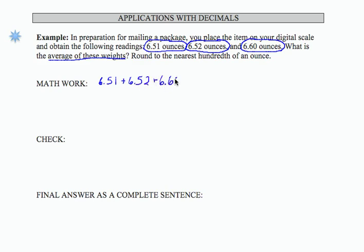So I'm going to add, and try to write a little bit more neatly here, and divide by 3. If I add those together, 6.51 plus 6.52 plus 6.60 on my calculator, I get 19.63 divided by 3.